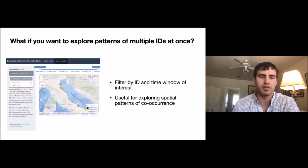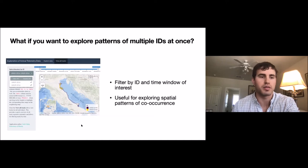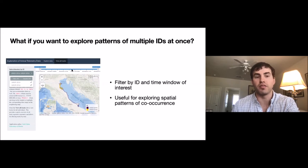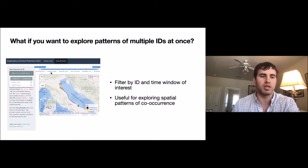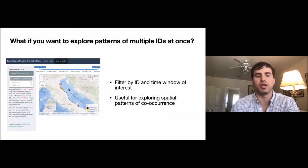If you want to explore multiple individuals at once, this can be done in the second tab — view all tracks — which allows you to look at all individuals in your data set at once. There's a dropdown menu on the sidebar where you can select any or all individuals from your data frame and filter them based on date and time. Currently this only accepts linear time — no day of year — but it's another way to visualize all individuals on the same map and look for patterns of co-occurrence through space and time.